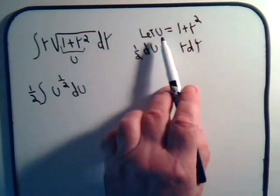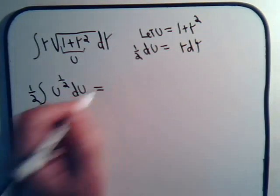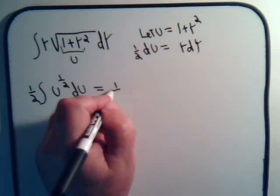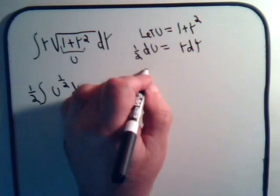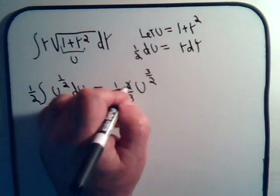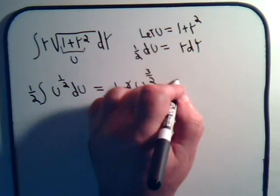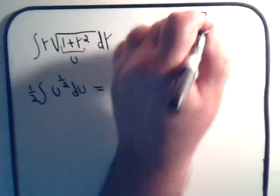With this simple substitution we recast the problem into this form and we can do this in our head. That's equal to one half, u to the one half plus one, that's u to the three halves, divided by three halves. So that equals one third u to the three halves.